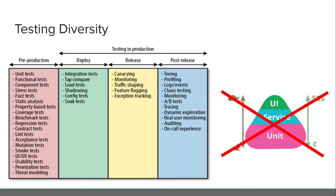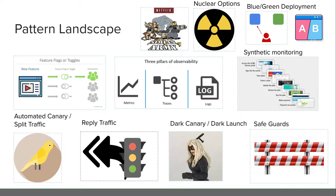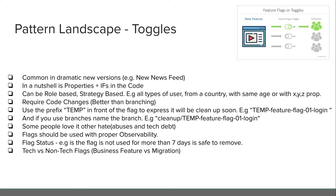The test pyramid idea worked a long time ago for back end, but now it doesn't work anymore. Even for front end, snapshotting and static typing like TypeScript would make more sense. The spectrum where you have pre-production, production, and more diverse forms of testing — that's really the way to go. Now let's talk about the pattern landscape: we're going to cover chaos engineering, nuclear options, blue-green, A/B testing, synthetic monitoring, observability, toggles, canary, replay traffic, dark canary, and safeguards.